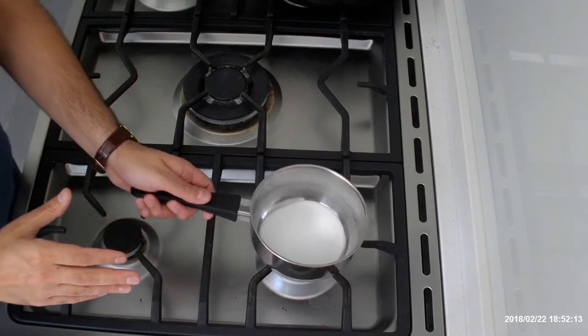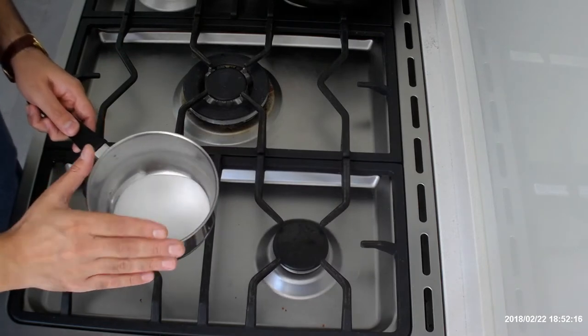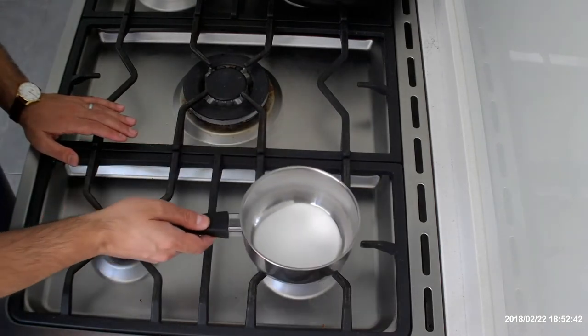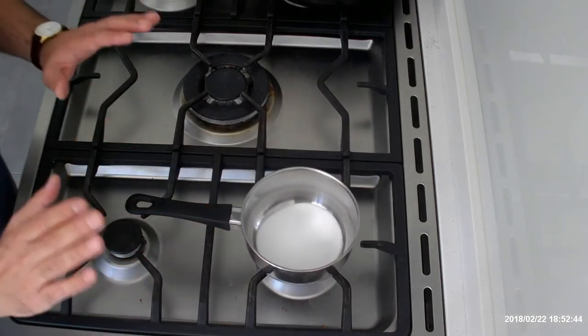First I've put some caster sugar in a bowl. I've got a gentle heat going there and I'm just going to put this on like this and I'm not going to stir it.